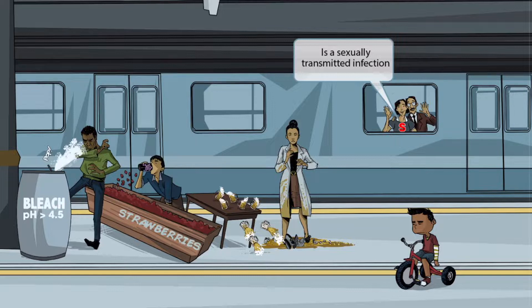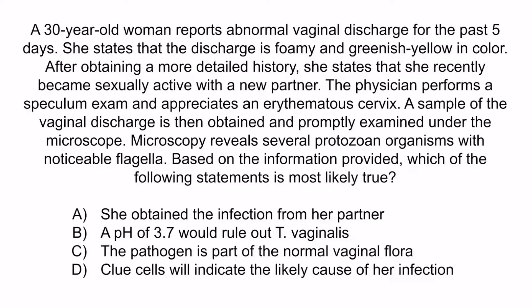Now let's do a question to apply what you've learned. A 30-year-old woman reports abnormal vaginal discharge for the past five days. The discharge is foamy and greenish-yellow in color. She recently became sexually active with a new partner. The physician performs a speculum exam and appreciates an erythematous cervix. Microscopy of the vaginal discharge reveals several protozoan organisms with noticeable flagella. Which of the following statements is most likely true? A: she obtained the infection from her partner. B: a pH of 3.7 would rule out Trichomonas vaginalis. C: the pathogen is part of the normal vaginal flora. Or D: clue cells will indicate the likely cause of her infection.